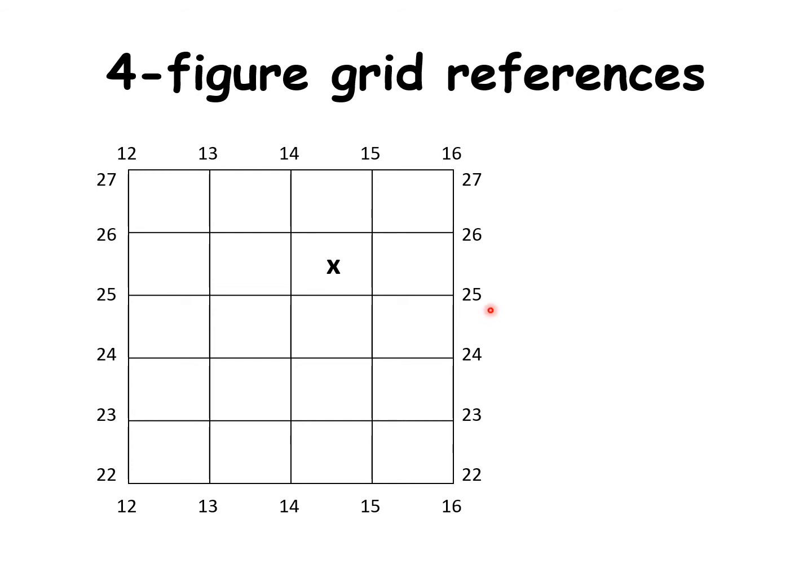And then you do the same at the side. Is X 25 or 26? We'll go down to the first number. 22 isn't going to be this bit of the grid. 22 is going to be the first row, which makes this one 23, this one 24, and this one 25. So X is 14 from the bottom and 25 from the side.